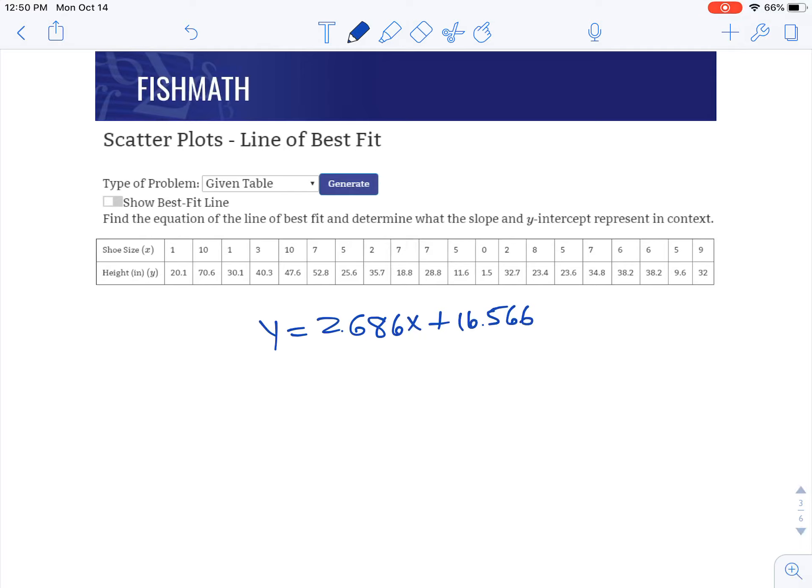Now in terms of the slope and y-intercept, this would be the y-intercept, this would be the slope, and what they represent. Well, the y-intercept is always (0, b), so zero something. So this would be when shoe size is zero, which may not make any sense—that's okay—the height is the y-intercept, so the height would be 16.566.